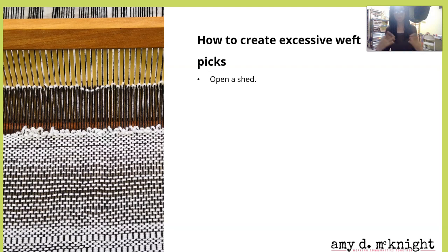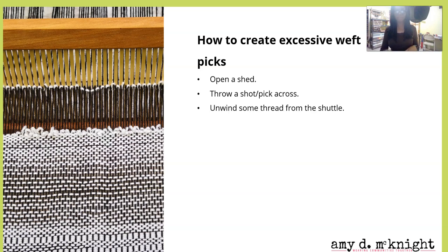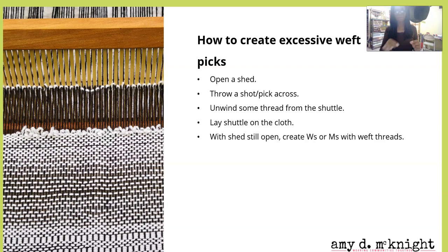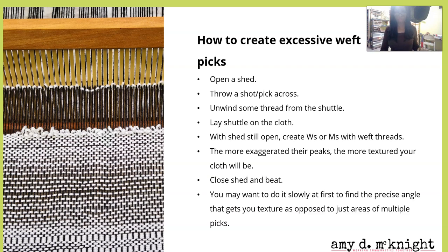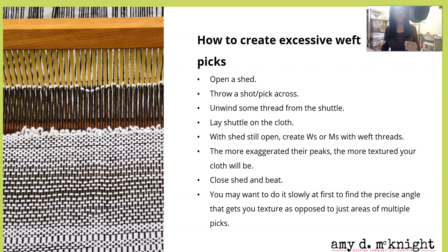Here's how to do it: open a shed, throw a shot across, unwind some thread from the shuttle, lay the shuttle on the cloth while the thread is still open, then create W's or M's with the thread — the more exaggerated the peaks, the more textured your cloth will be. Then close the shed and beat. You may want to do this slowly at first to find the precise angle your shuttle needs to be to get the texture.